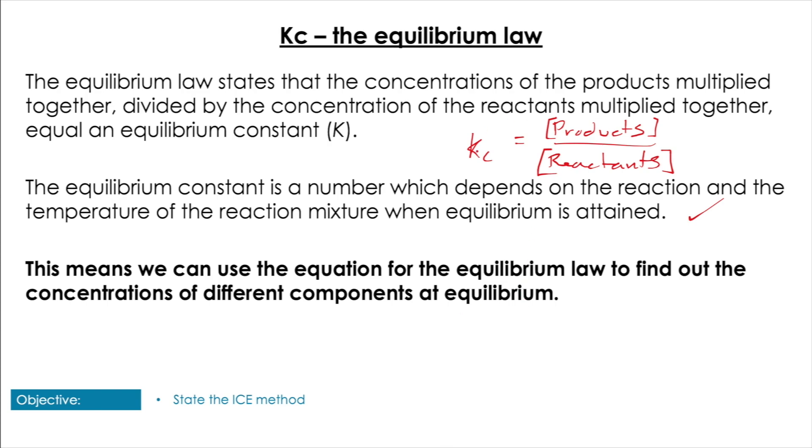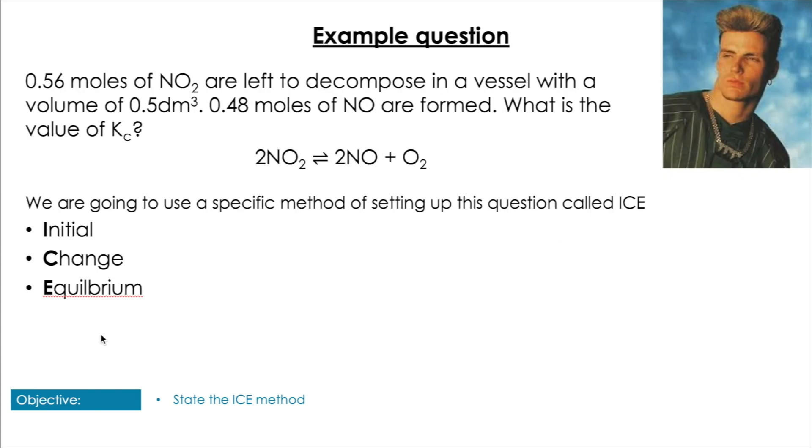To do this we're going to use a method called the ICE method. ICE stands for Initial, Change, and Equilibrium. We're going to set up each question stating what the initial concentration was, what the change will be, and what it will be at equilibrium.